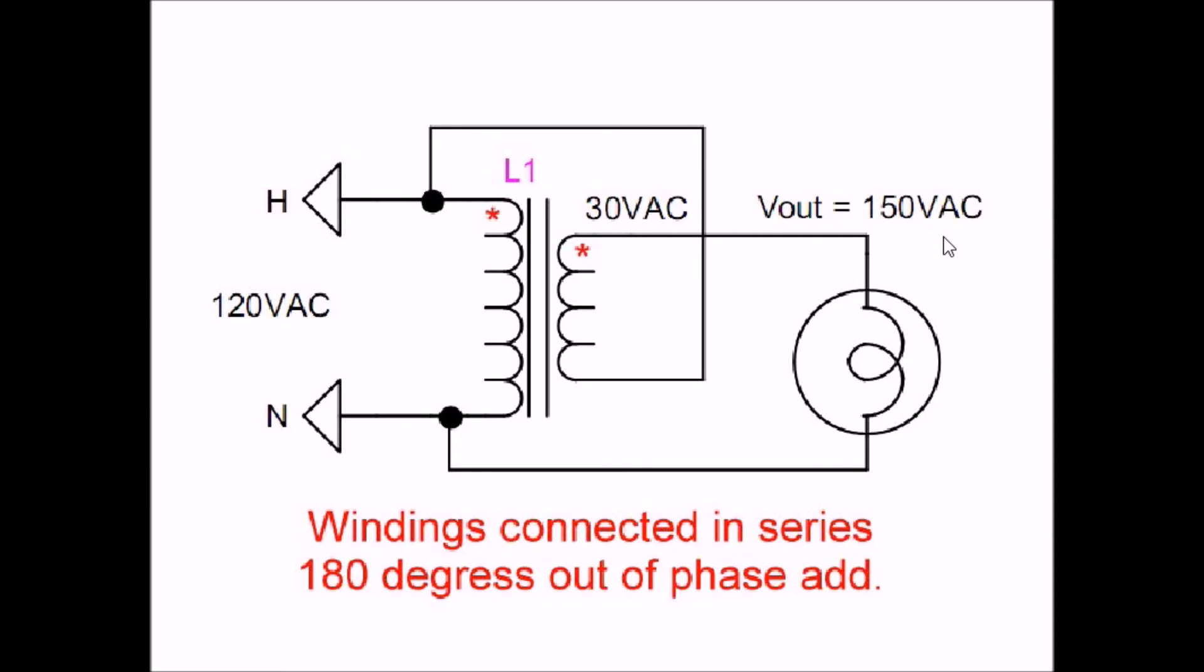Think of it this way: if they are out of phase, that means when this winding is going positive, the bottom part of this winding is going negative. If you connect plus to minus when putting batteries in series, doesn't the voltage add? AC does the same thing depending on the phase angle. They're perfectly 180 degrees out of phase and thus they will add.